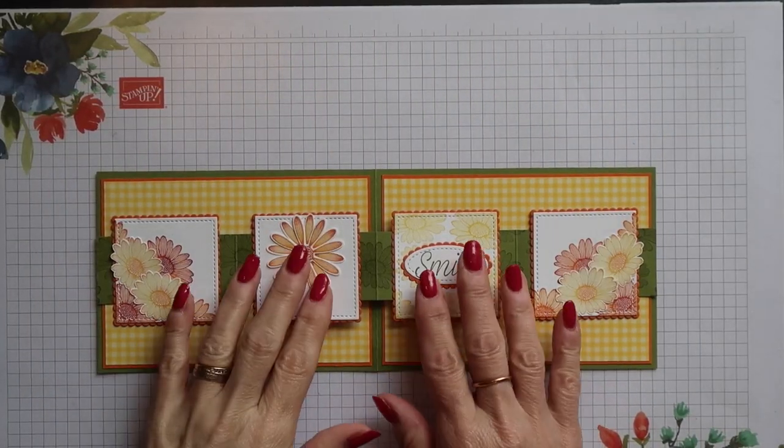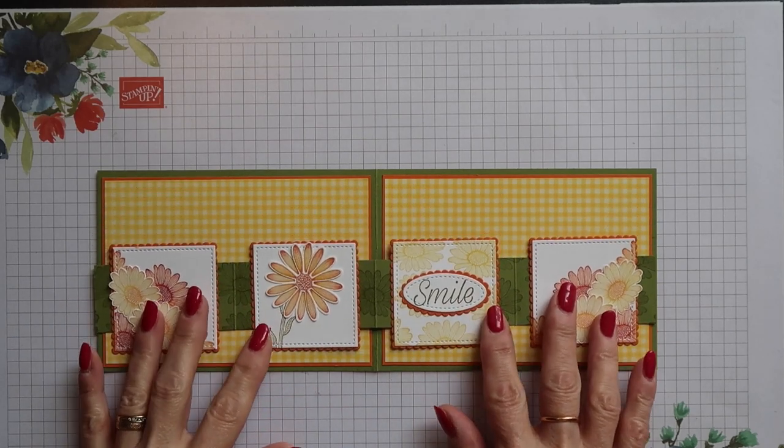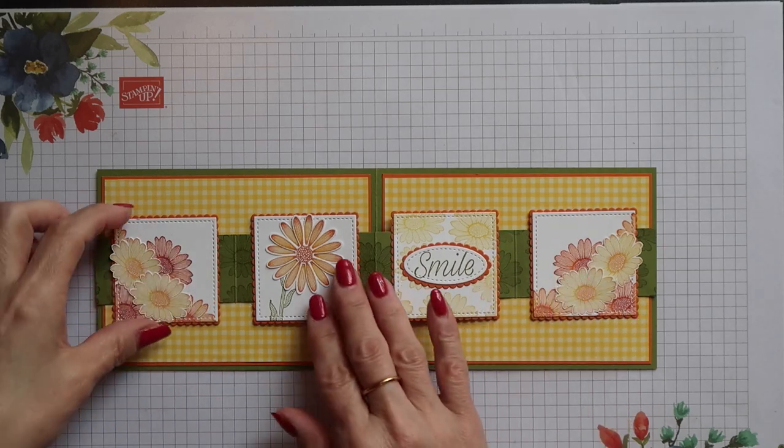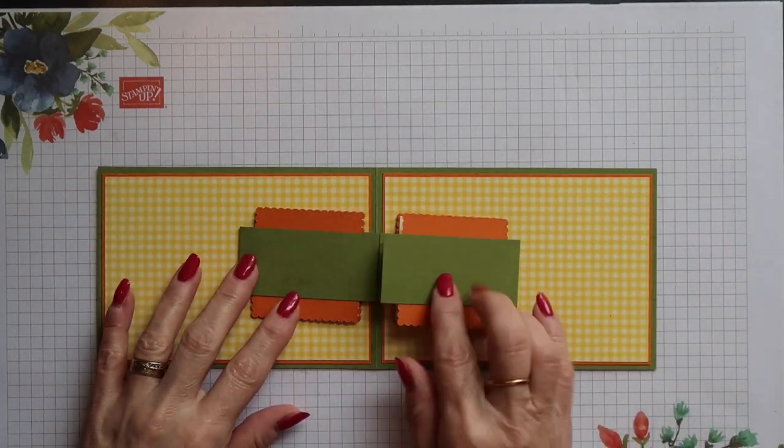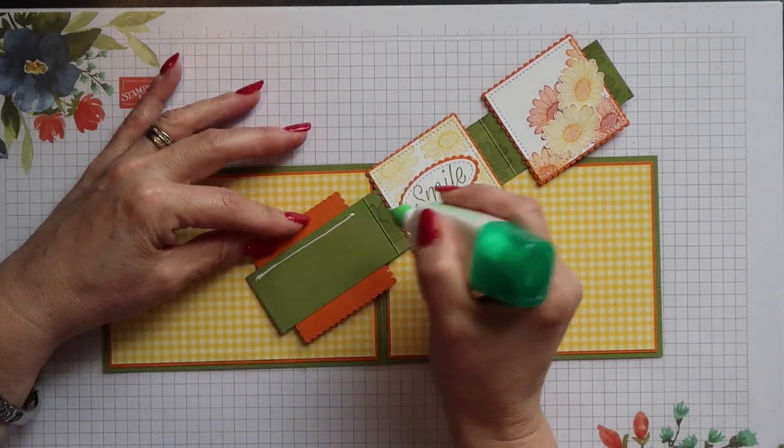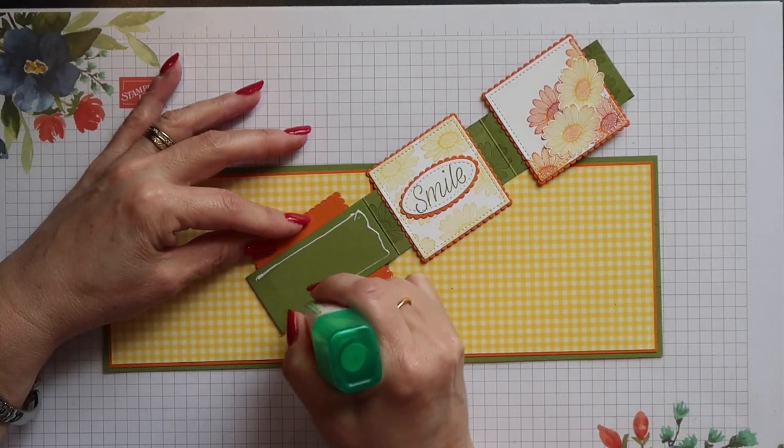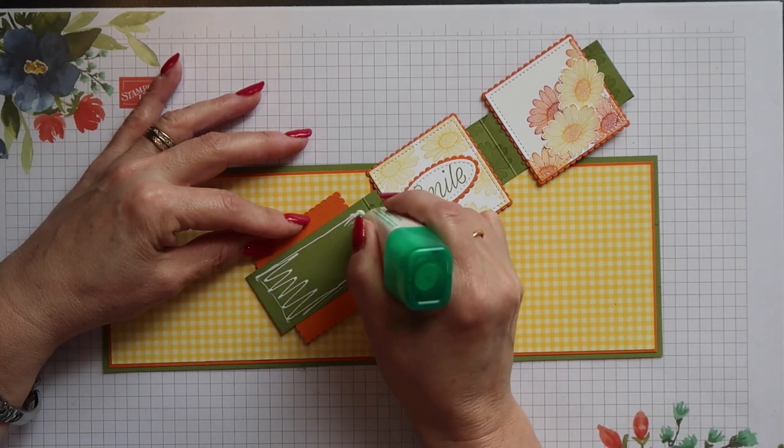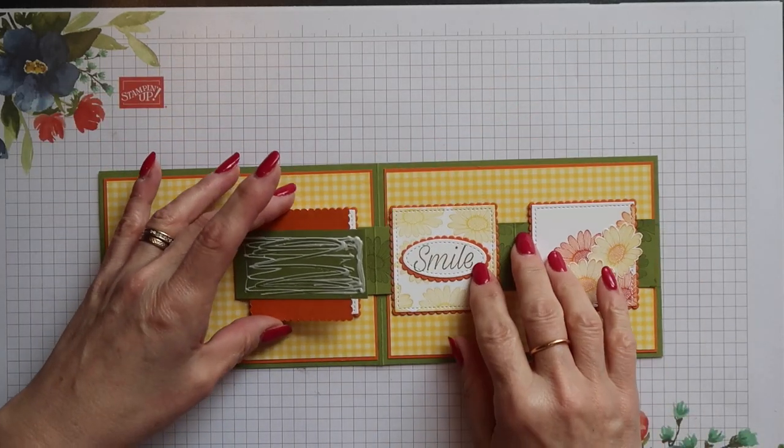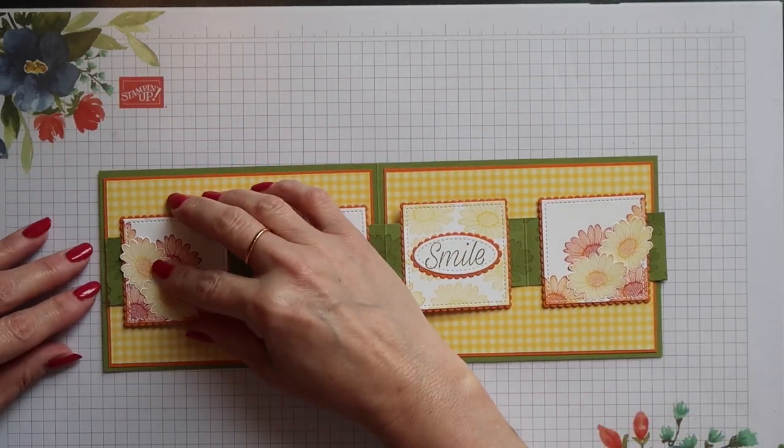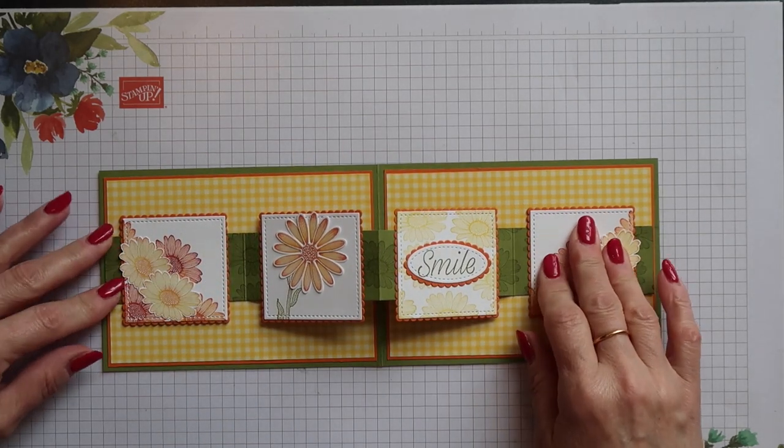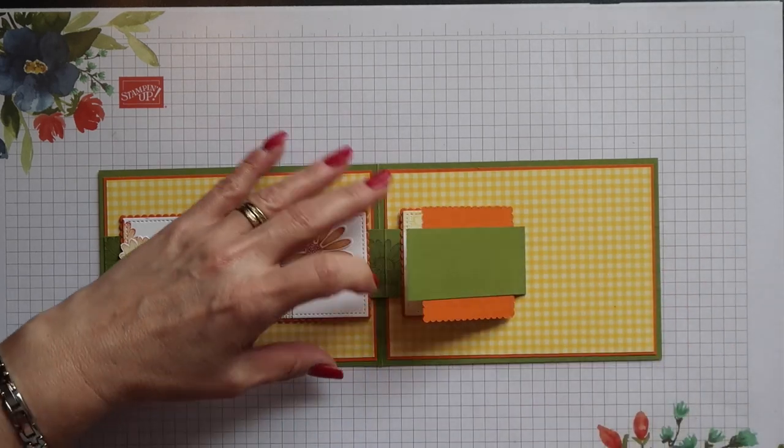I'm going to position my strip across the centre of the card but you don't have to, it can go higher or lower, whatever you wish to do. The glue goes on each end panel. I've also added pencil marks on the edges of my card just to help me position this centrally. You take the edge of the strip and you align it with the pumpkin pie layer so it comes in from the edge of the card.